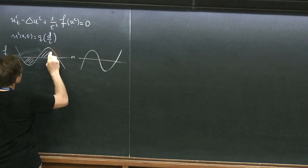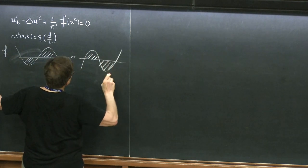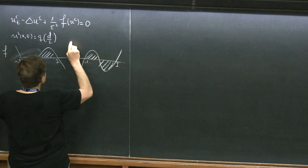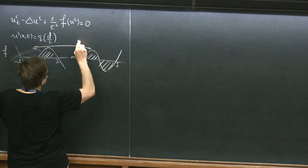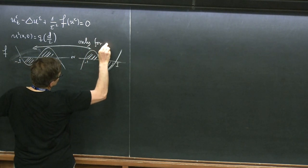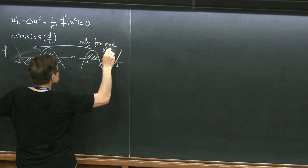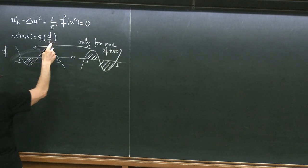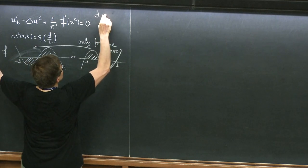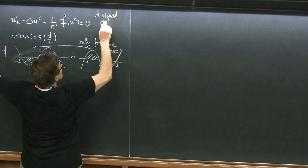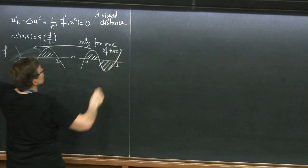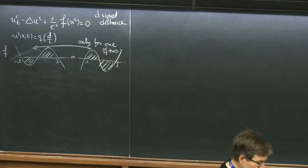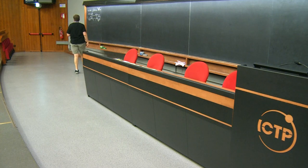The key thing is that the area on both sides is the same. I normalized everything so the equilibria are plus one and minus one, and I emphasize it works only for one of the two wells. For well-prepared data — meaning initial data of the form where D is the signed distance — the proof works. For the rest of the day, D will denote signed distance.